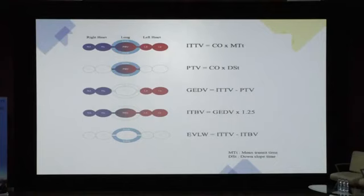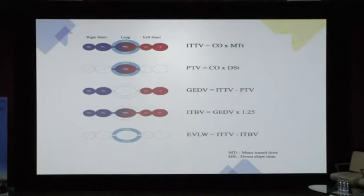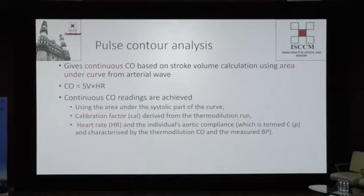By subtracting pulmonary thermal volume from intrathoracic thermal volume, you get the Global End-Diastolic Volume (GEDV). Multiplying GEDV by 1.25 gives intrathoracic blood volume, since the thermal volume in the lungs is approximately 1.25 times the GEDV. The difference between thermal volume and blood volume gives the extravascular lung water — allowing treatment of pulmonary edema. Dividing by body surface area converts volumes to indices. This is how the monitor derives all values to guide patient treatment.